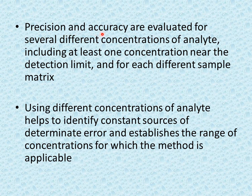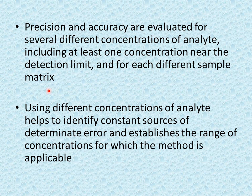Precision and accuracy are evaluated for several different concentrations of the analyte. These parameters are not measured using only a single concentration; rather, they are evaluated using a variety of concentrations, including at least one concentration near the detection limit. These are also evaluated for each different sample matrix, so for different samples with different concentrations and sample matrices, precision and accuracy are all calculated.